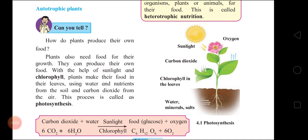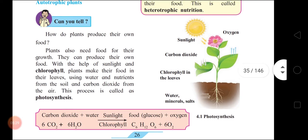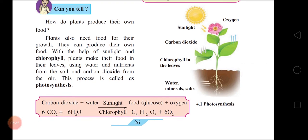Nutrition in plants: How do plants produce their own food? Plants prepare their own food by the process of photosynthesis. Those organisms that produce their own food are autotrophic. Plants need food for their growth and can produce their own food with the help of sunlight and chlorophyll. Plants make their food in their leaves using water and nutrients from the soil and carbon dioxide from the air. This process is called photosynthesis.